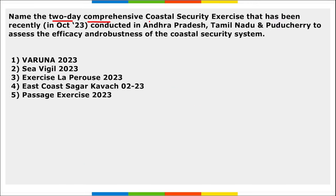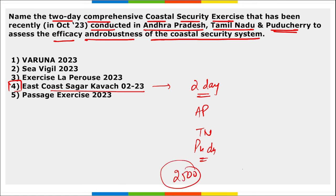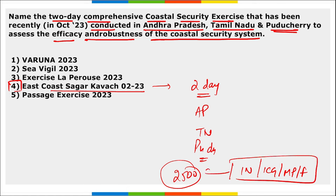Next: name the 2-day comprehensive coastal security exercise recently conducted in Andhra Pradesh, Tamil Nadu, and Puducherry to assess the efficiency and robustness of the coastal security system. It is East Coast Sagar Kavach 2023. Almost 2,500 personnel including Indian Navy, Indian Coast Guard, various marine police, fisheries, international agencies, lighthouses, port, and forest departments were engaged in this exercise. It was held across three locations: Andhra Pradesh, Tamil Nadu, and Puducherry.